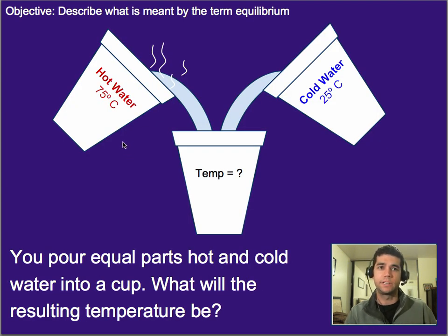So one last thing for us to consider before we move on. I want you to think about this for a second. We've got a cup of hot water and a cup of cold water. Let's pretend they have the same amount of water in them, about half a cup each. And we're going to pour them into this singular cup right here. What's going to be the temperature of the combined hot and cold water? Go ahead and pause the video and think about it for a second.